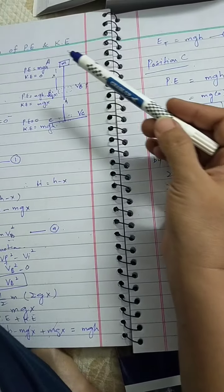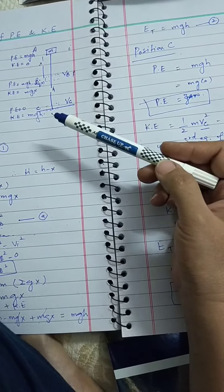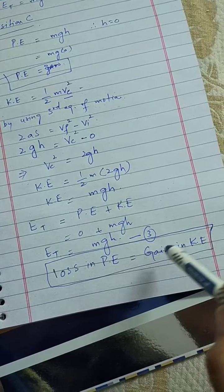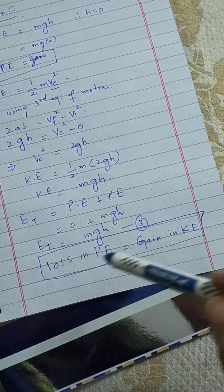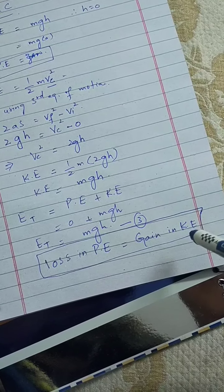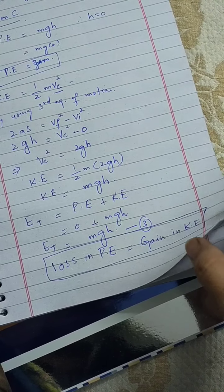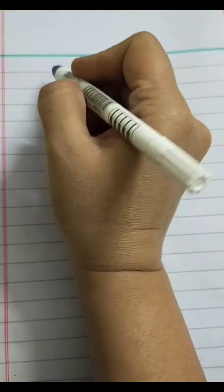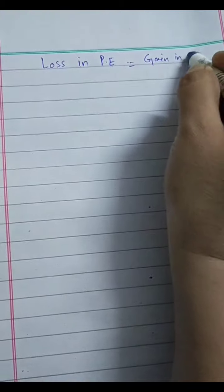This derivation was done for the case where there is no resistive medium and friction is totally neglected. If we do not neglect friction and count it, then this conclusion no longer holds as it is. The modified equation becomes: loss in kinetic energy equals gain in kinetic energy plus work done against friction. We can write: loss in potential energy equals gain in kinetic energy plus work done against friction.